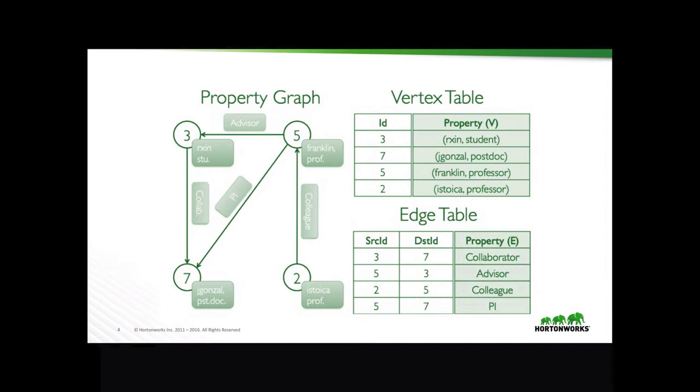Let's look at two vertices, specifically two and five. If you look them up in the table, two corresponds to Ion Stoica and he's a professor, and five corresponds to Franklin who's also a professor. In the edge table, this information will be looked up by going from source to destination, or two to five, and the relationship or the property between them is of type colleague. Visually, it's this arrow over here. If you look at other relationships, you'll find that they're natural and self-explanatory.